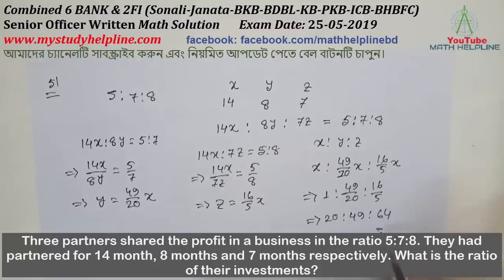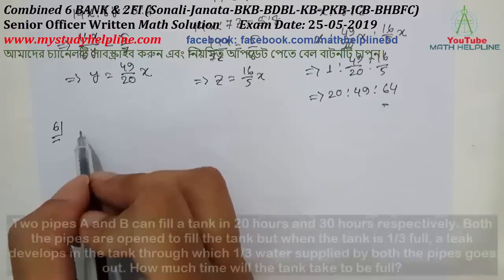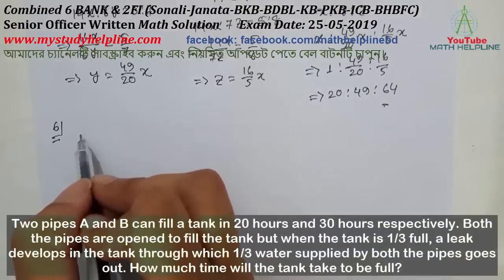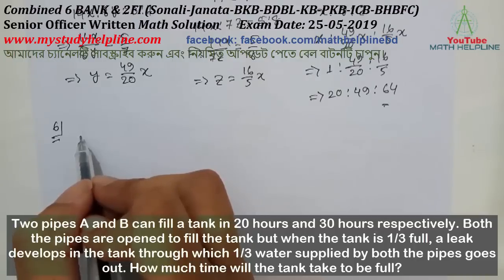Problem number 6: Two pipes A and B can fill a tank in 20 hours and 30 hours respectively. Both the pipes are opened to fill the tank, but when the tank is one-third full, a leak develops through which one-third of the water supplied by both pipes goes out. How much time will it take to fill the tank?